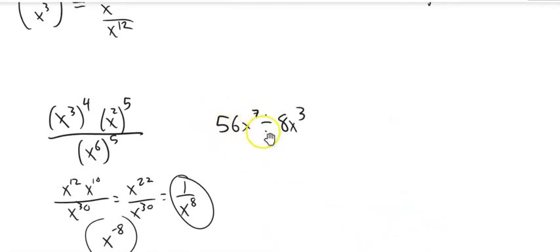56 X to the 7th divided by 8 X cubed. This is the same as a fraction. Fractions are just division. Top thing divided by bottom thing. 56 over 8, I believe that's 7. X to the 7th over X cubed is X to the 4th. So that resolves to that.